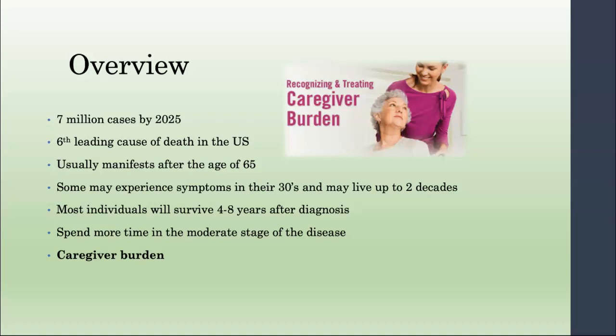We'll talk more about the stages. The big thing to think about is that when you have a patient in the early to moderate stages who may be physically functioning but doesn't have appropriate judgment and really isn't independent, that creates a huge caregiver burden. We'll talk about that as well.